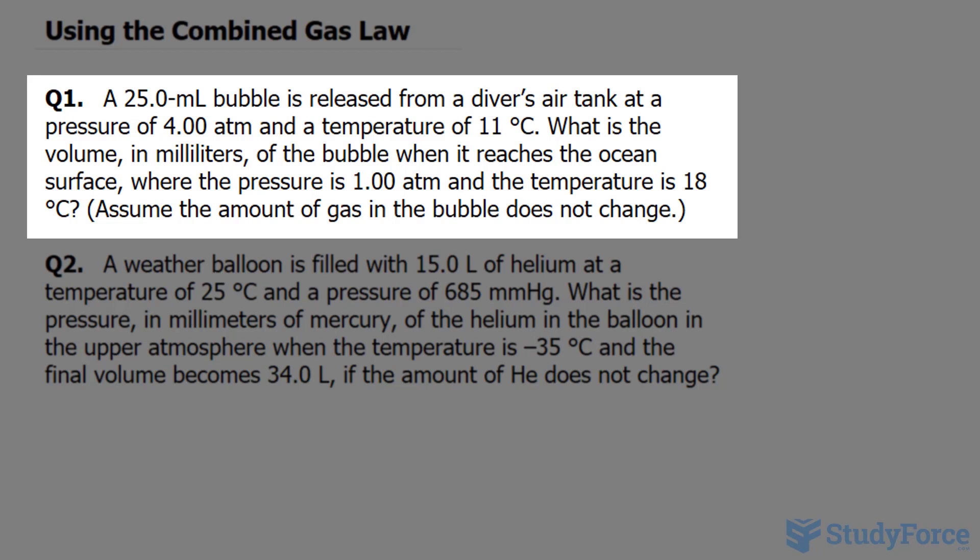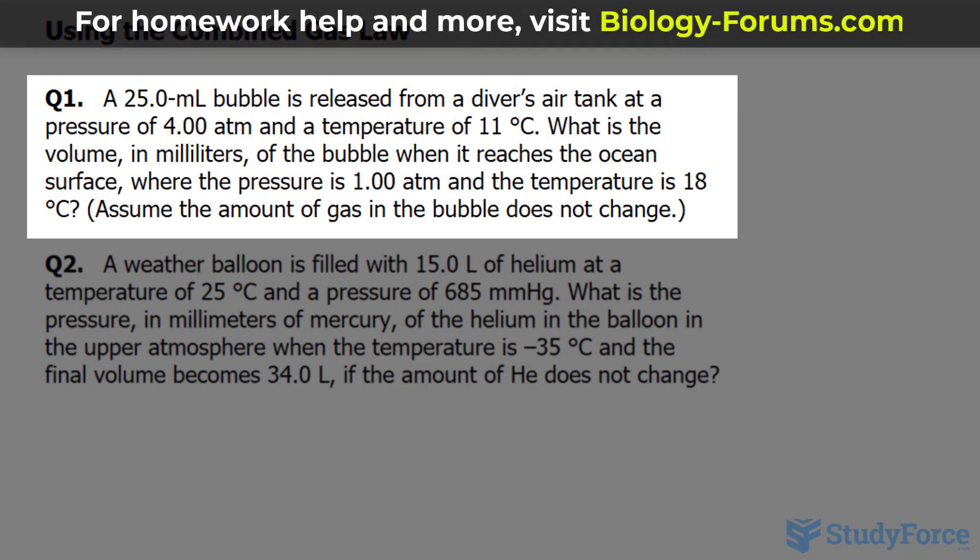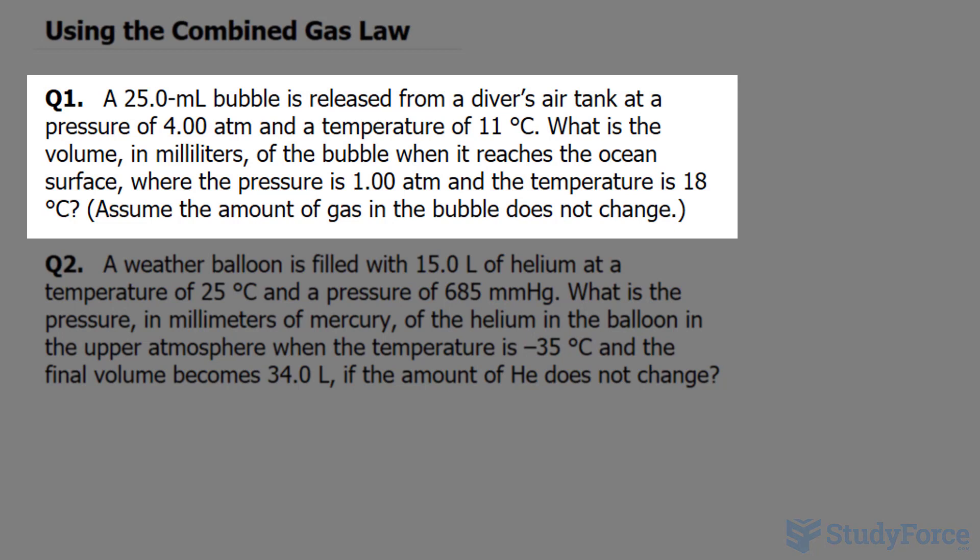A 25.0 milliliter bubble is released from a diver's air tank at a pressure of 4.00 atmosphere and a temperature of 11 degrees Celsius. What is the volume in milliliters of the bubble when it reaches the ocean surface, where the pressure is 1.00 atmosphere and the temperature is 18 degrees Celsius?